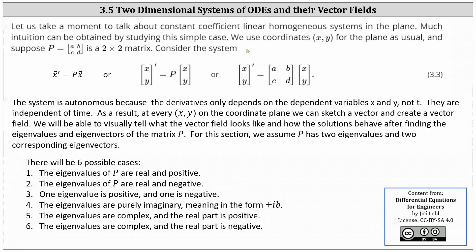In this lesson, we will talk about constant coefficient linear homogeneous systems in the plane. Much intuition can be obtained by studying this simple case. We use coordinates x, y for the plane as usual, and suppose P is a two by two matrix. The system is autonomous because the derivatives only depend on the dependent variables x and y, not t. They are independent of time. As a result, at every point x, y on the coordinate plane, we can sketch a vector and create a vector field. We will be able to visually tell what the vector field looks like and how these solutions behave after finding the eigenvalues and eigenvectors of matrix P.